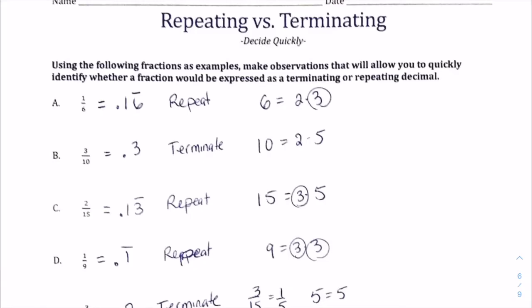Hello everyone, in this lesson we're going to be talking about repeating and terminating decimals and their interaction with fractions. In person I like to do this as a discovery lesson, but online I'm going to summarize what might have happened if we'd done some exploration. You could look at some of these fractions and try to determine which ones are going to repeat or terminate on your own, or make up any other fraction and see if you can predict it before calculating its decimal equivalent.